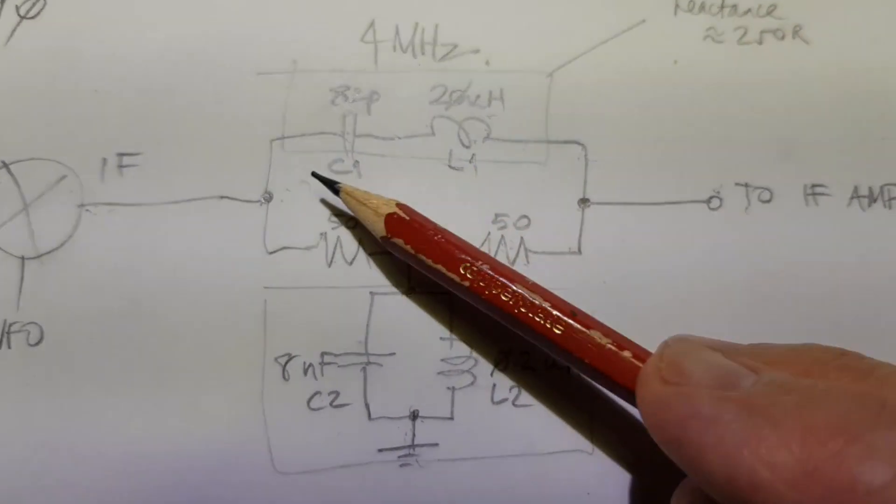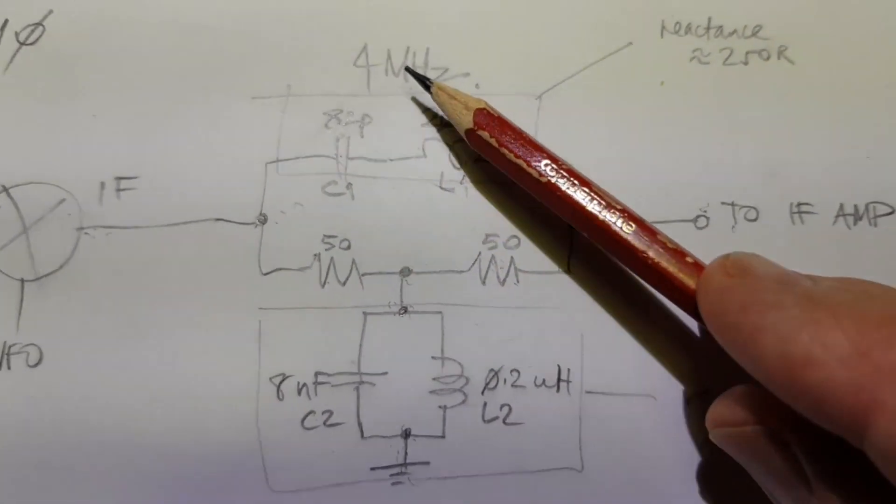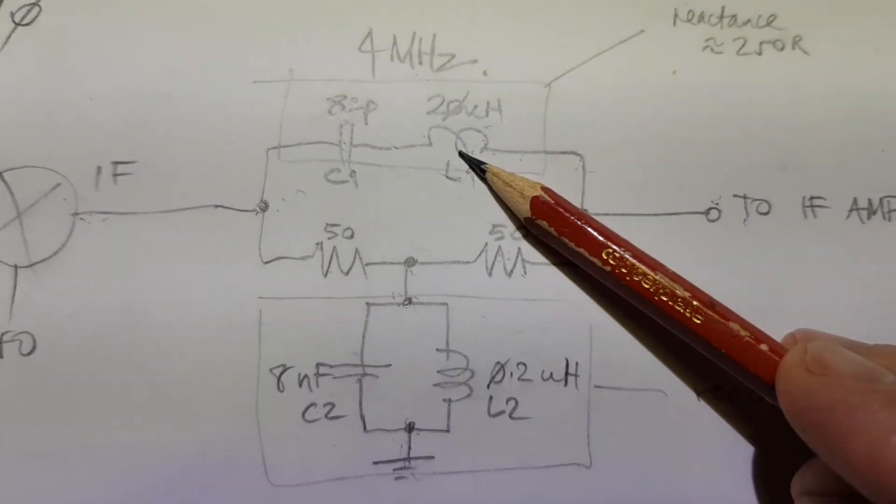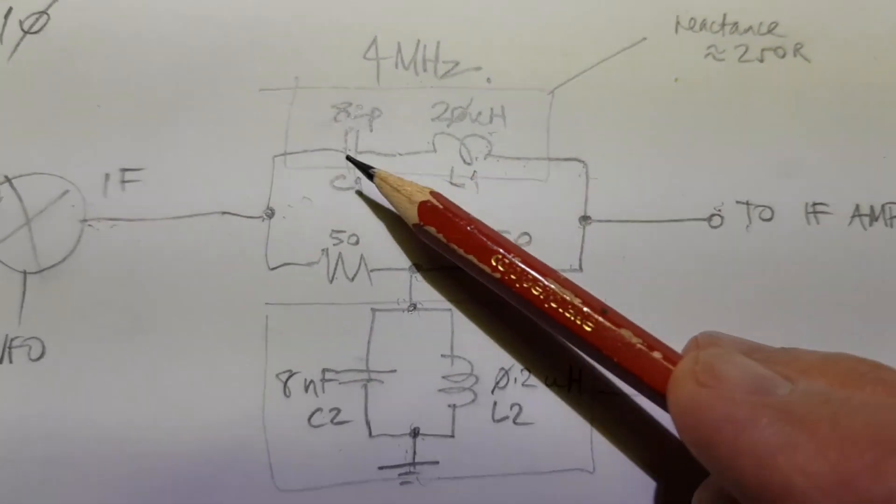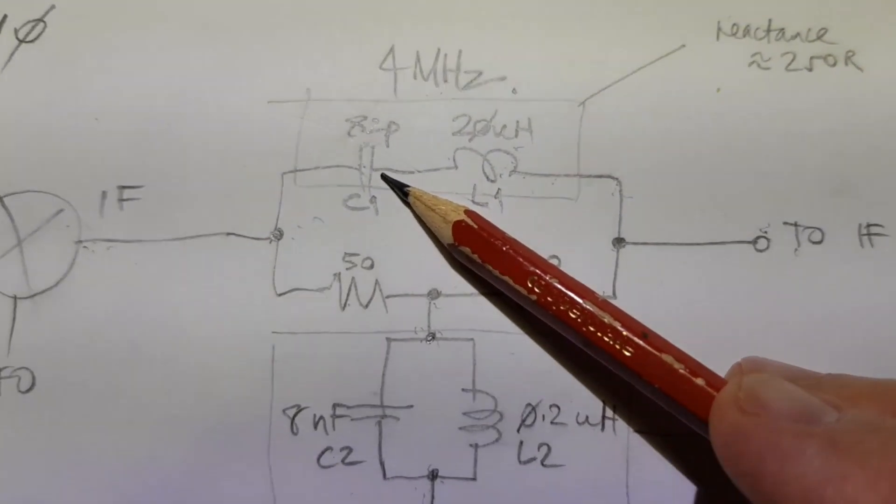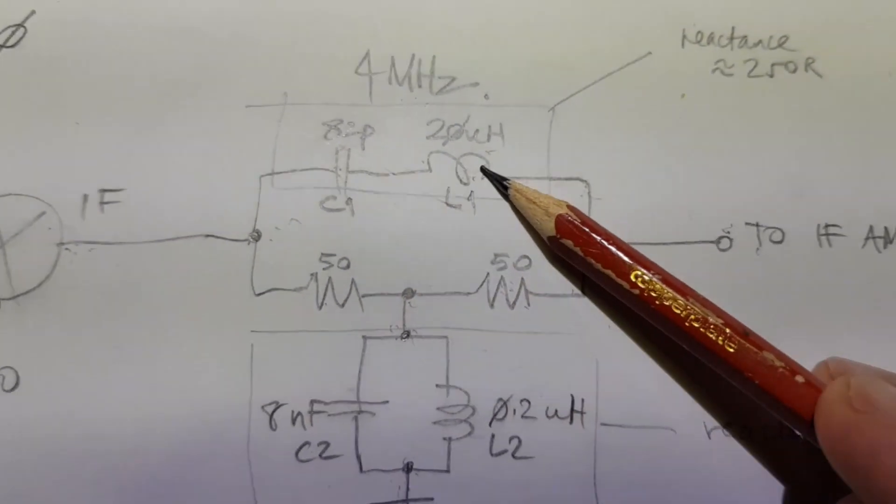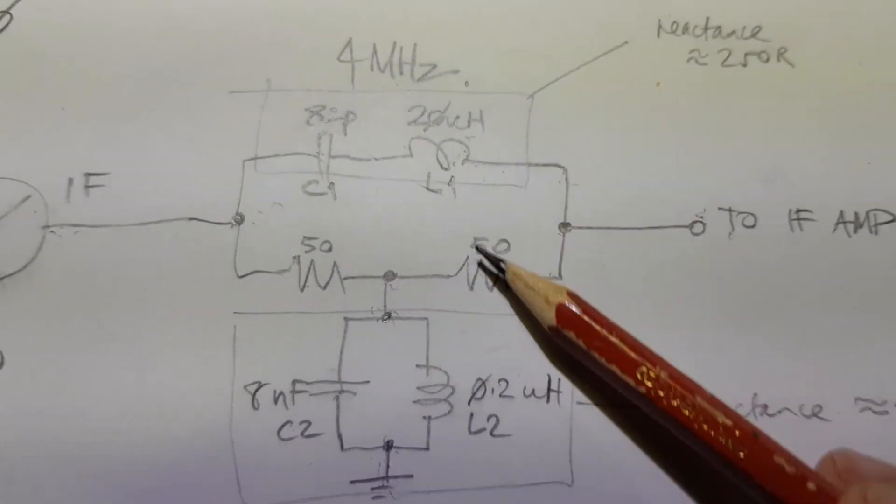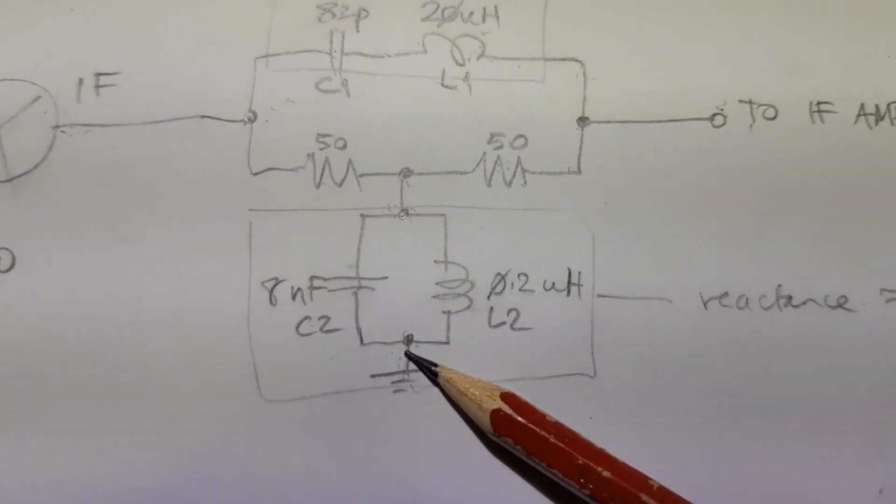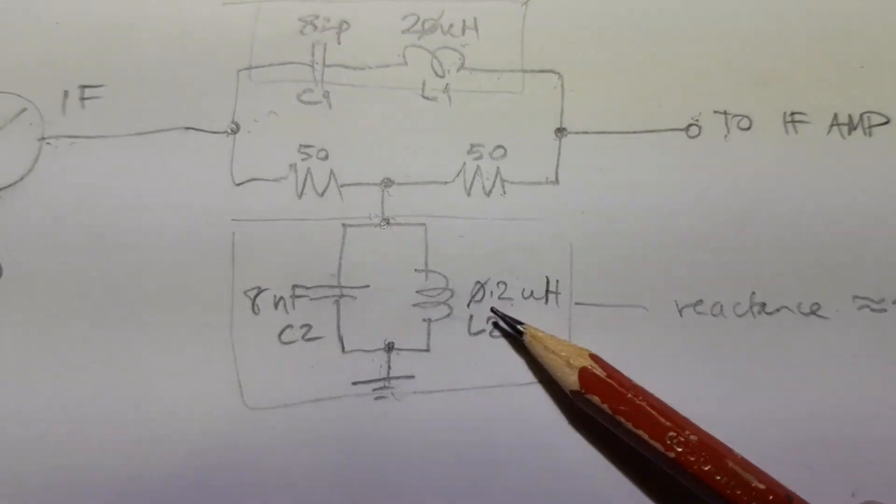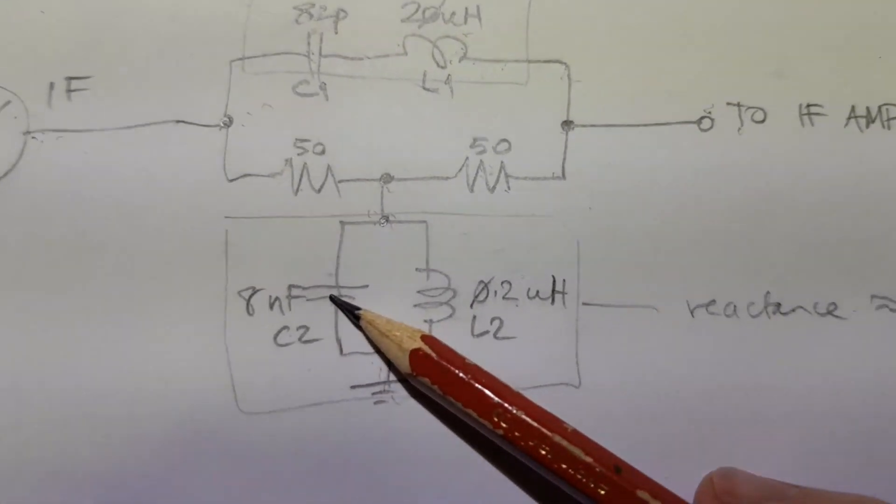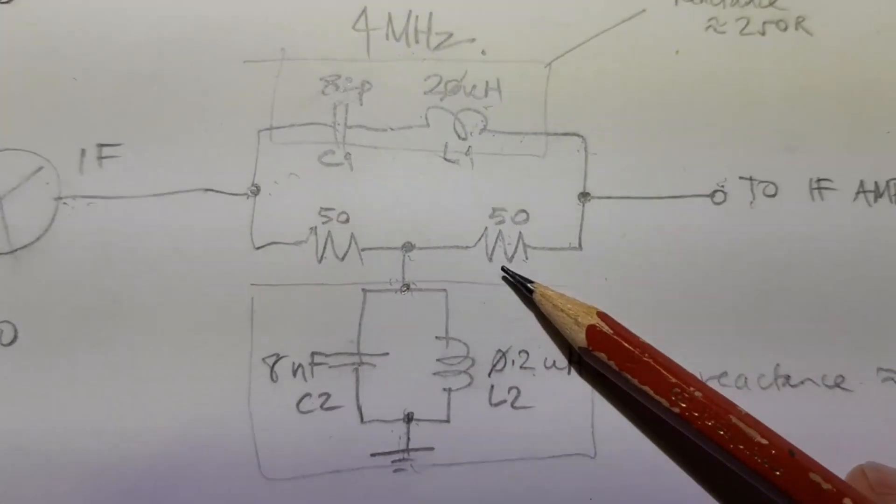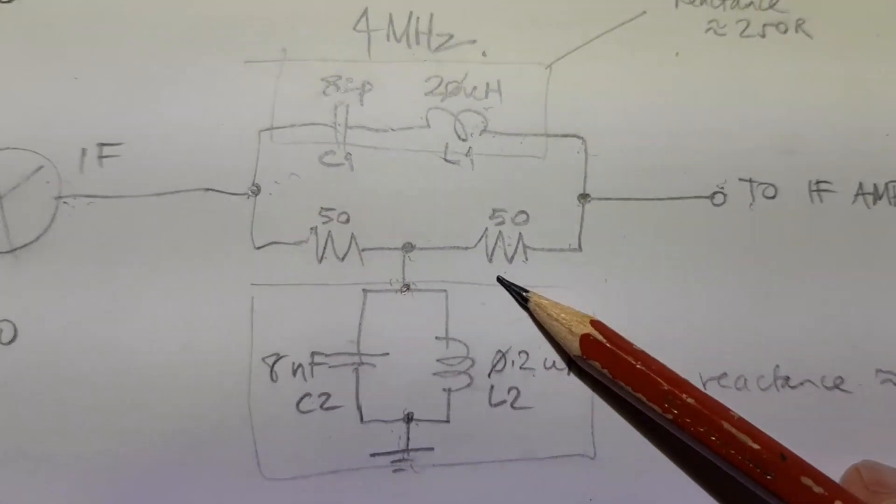When you put a Q of 10 in, you get some really odd values. So at 4 MHz, the bridged-T diplexer needs 20 microhenries in series with 82 picofarads. That's a big inductor in series with a small capacitor. And down here in the parallel tuned circuit, 200 nanohenries in parallel with 8 nanofarads. I think the high Q option gives you a much narrower diplexer.